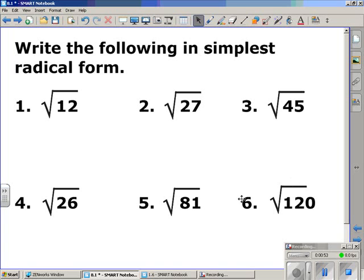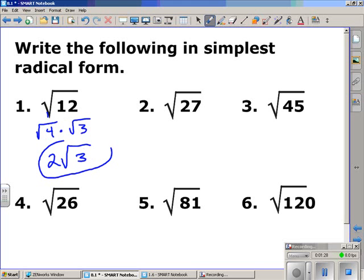Here we're going to write the following in the simplest radical form. When we start off with number 1, we'll be looking at the square root of 12. 12 is not a perfect square number which means we cannot take the square root of it and get a whole number answer. But we can break it down into two factors. The first factor being the square root of 4, and the second factor being the square root of 3. Of those two factors, we can take the square root of 4. We write that out as a product because we're talking about factors. The square root of 4 is 2. And since we can't evaluate the square root of 3, we leave it. 2 square root of 3 is the simplest radical form of 12.